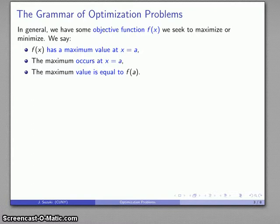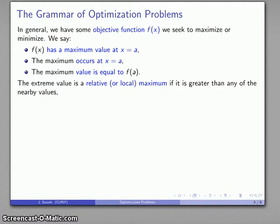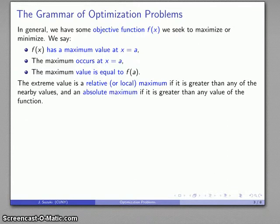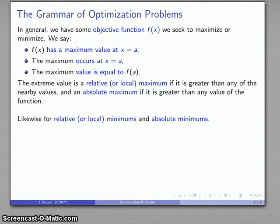We have to go a little bit farther. The extreme value — the maximum or minimum value — is called a relative or local maximum or minimum value if it's greater than any of the things that are close by. And it's an absolute maximum if it's greater than any actual value of the function. Likewise, we flip the terms for local or relative minimums and absolute minimums.